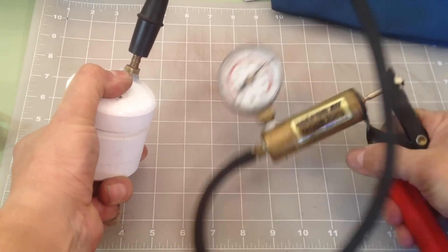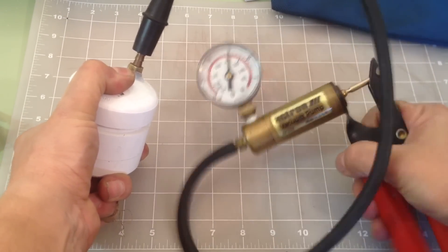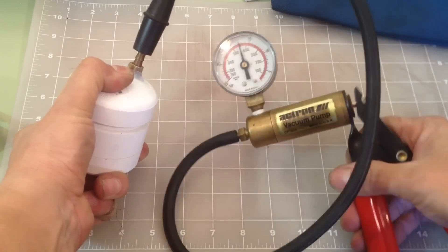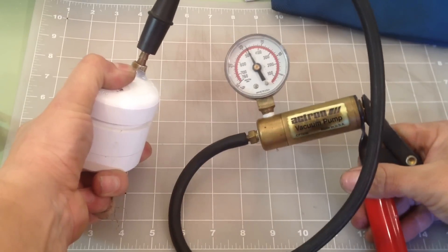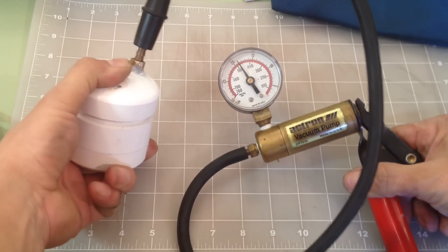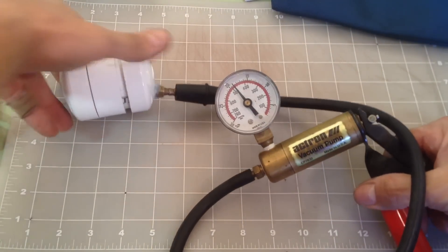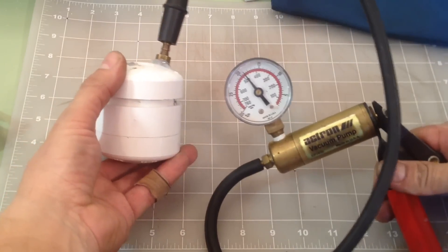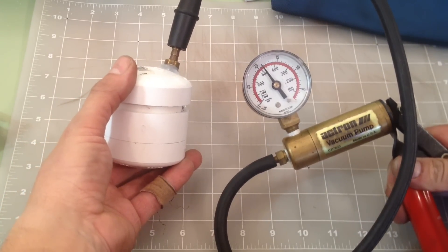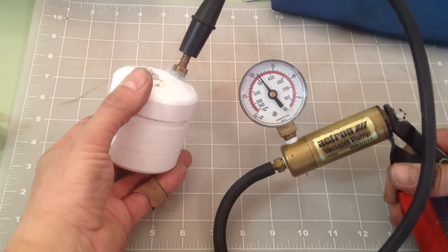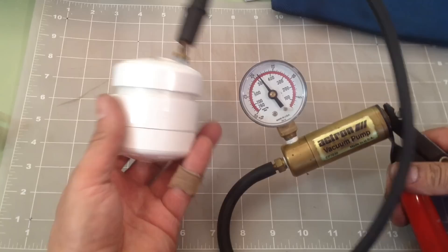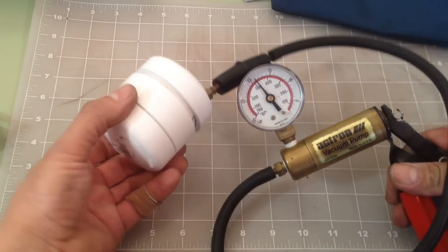I apply some pressure to the end caps to ensure a positive seal while squeezing the handle of the vacuum test unit. This evacuates the air from the chamber which is indicated by the gauge. Once I verify that there are no leaks I release the vacuum with the purge valve.